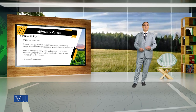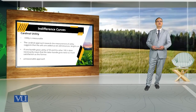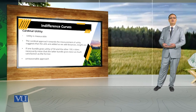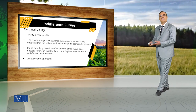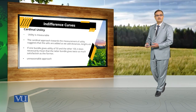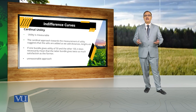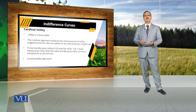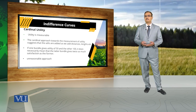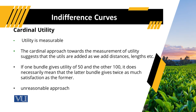So, the utility someone is getting from the consumption of one commodity depends upon the quantities of other commodities too. Under the cardinal approach, we assume we can add utility that we are getting from different commodities, and those utility quantities are independent from the quantities of other commodities. This is an unreasonable approach to measure utility.